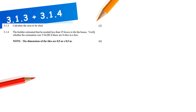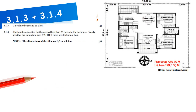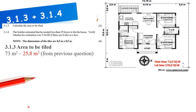Calculate the area to be tiled. The total floor area of the house is 73 m². Subtract the carpet area from the previous question: 73 − 25.8 = 47.8 m² to be tiled.